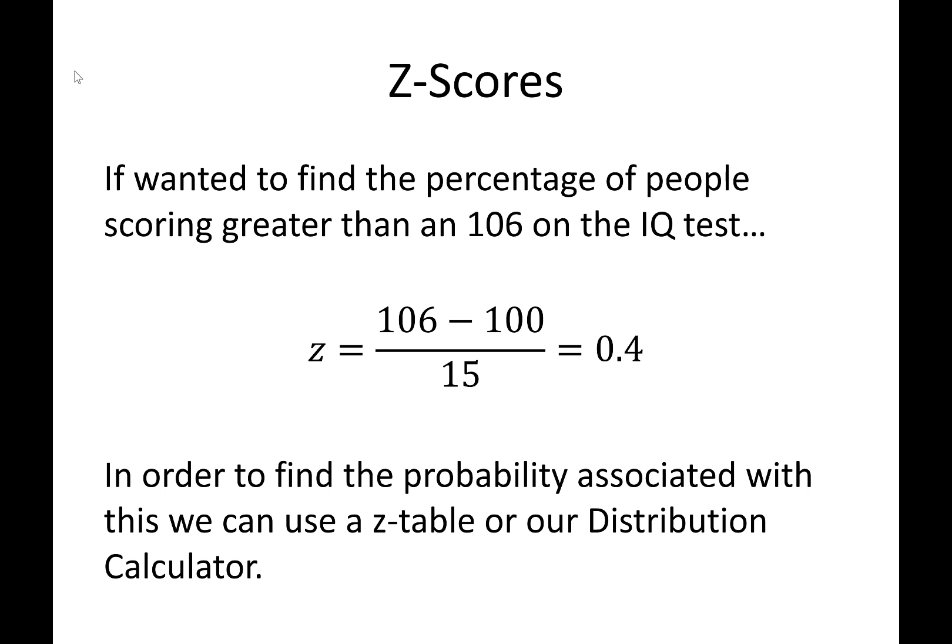So let's check out this example. If we were to find the z-score associated with a 106, we would find that 106 is 0.4 standard deviations away from our mean. 106 again is 0.4 standard deviations away from our mean. That's how we would interpret a z-score.